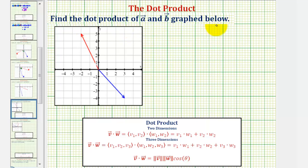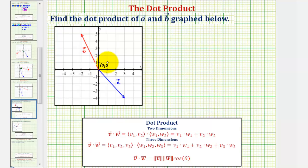We want to find the dot product of vector A and B graphed below. The blue vector is vector A and the red vector is vector B. Both vectors have their initial points at the origin, zero comma zero. Vector A has a terminal point at three comma negative four, and vector B has a terminal point at negative two comma five.